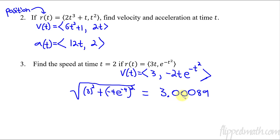Technically, on a test you'd only need three decimal places. So you might say 3.001. That's our speed.